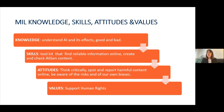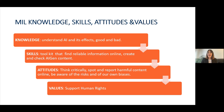Media information literacy provides knowledge, skills, attitudes, and values. Knowledge that helps to understand artificial intelligence and its effects, good and bad. Skills to help find reliable information online and check and create reliable information. Attitudes that help to think critically, spot and report harmful content online, and be aware of the risk of our own biases. And values — very importantly, to support a human rights approach all through the electoral cycle.